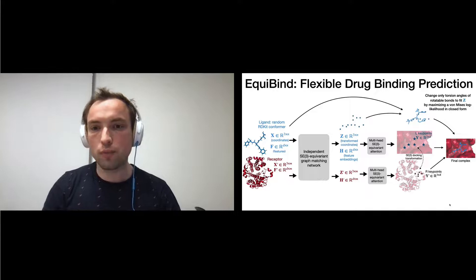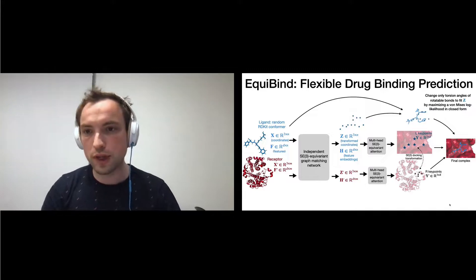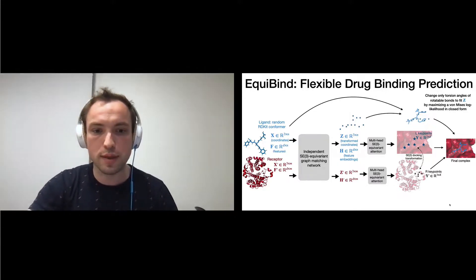In order to obtain biologically plausible deformations of the ligand, we are going to change only torsion angles of rotatable bonds of the initial conformer to fit the transformed coordinates by maximizing a von Mises log-likelihood in closed form as a post-processing step.